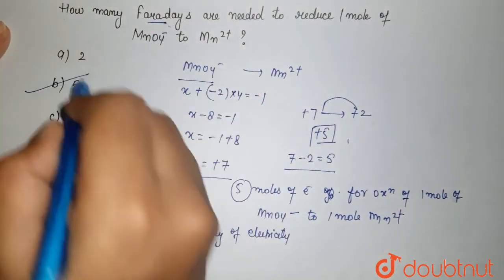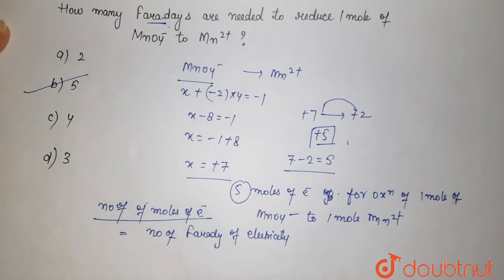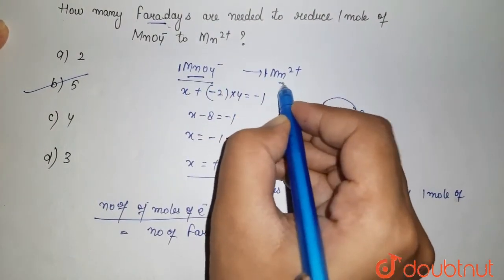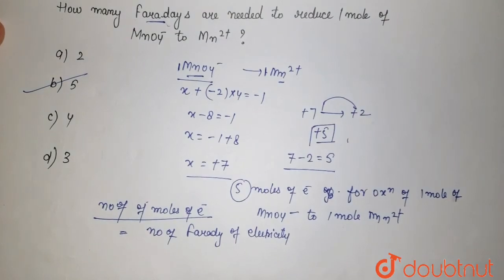So how many Faradays? That is 5 Faradays are needed to reduce 1 mole of MnO4- to 1 mole of Mn2+. So option B will be your right answer.